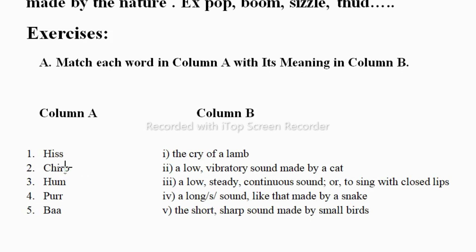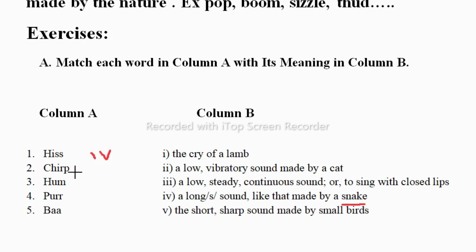The hissing sound is made by a cat, lamb, bird, or snake — it's the snake. So we'll match it with the fourth one: the hissing sound made by a snake. And chirping — chirping is a sound made by small birds.